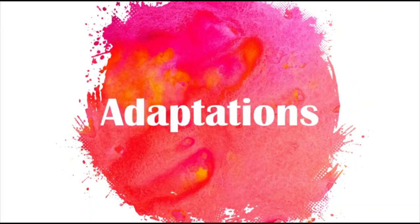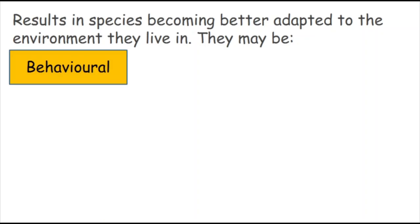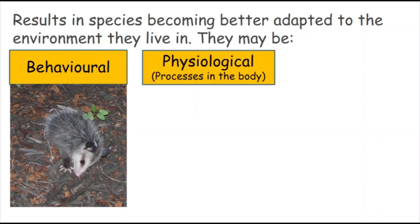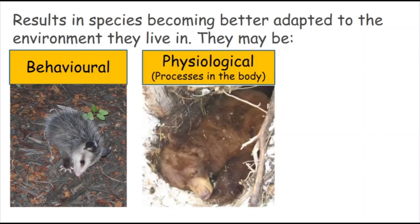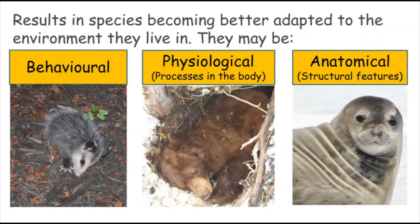Adaptations are changes in characteristics which result in species being more likely to survive in an environment, becoming better adapted to where they live. These can be behavioral — like a possum playing dead; physiological — processes within the body, like what happens inside a bear when it hibernates and all processes slow down; or anatomical — structural features like a seal's layer of blubber to keep warm and streamlined for swimming.